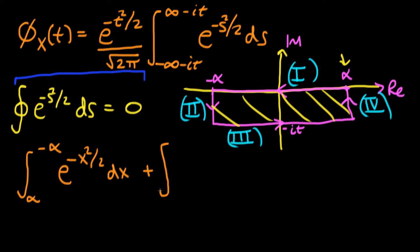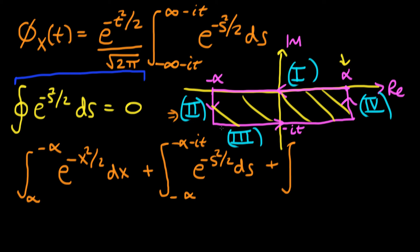The second part of the integral: we're starting at minus α and going to minus α minus it. Now s has both real and imaginary components, so we write e^(−s²/2) ds. The third part is the integral we're interested in — starting at minus α minus it and going to α minus it — and again we integrate e^(−s²/2) ds.